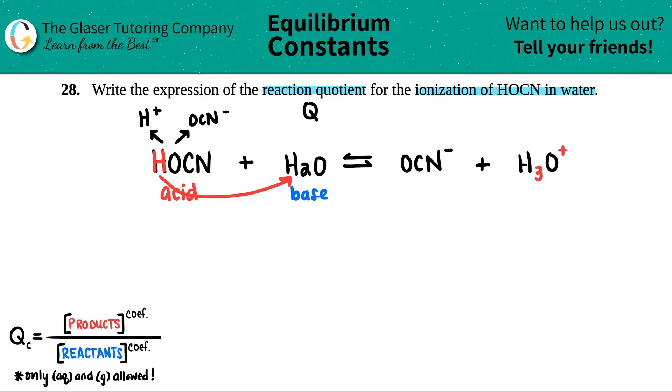Now we just need to find out the states of these. So first, let me just get rid of this. Now, there's a trick here. Anytime that you have ions, meaning you have charges in the upper right-hand corner, these are going to be aqueous. So AQ and AQ.